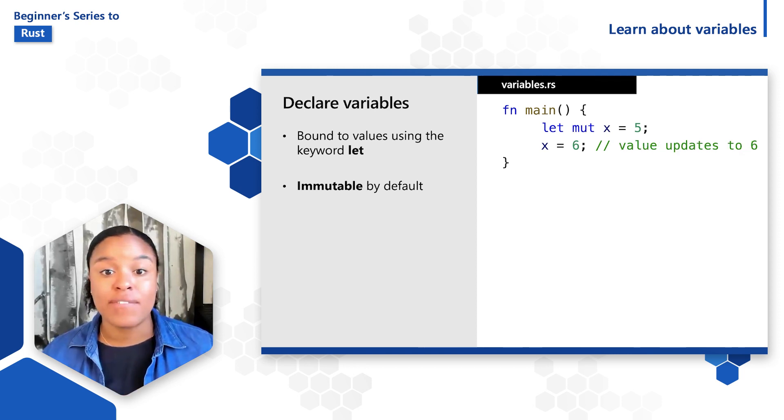To be able to change the value of the variable, I would need to make the variable mutable by adding the mut keyword, M-U-T, before the variable name. So a mutable variable will be defined as let mut x is equal to 5, and then x can be bound to another value with the statement x equals 6.